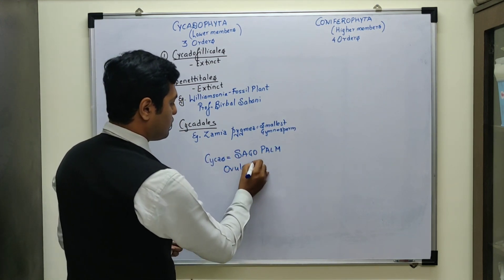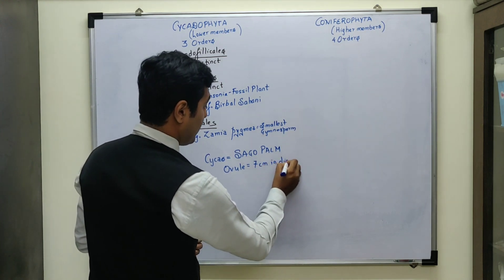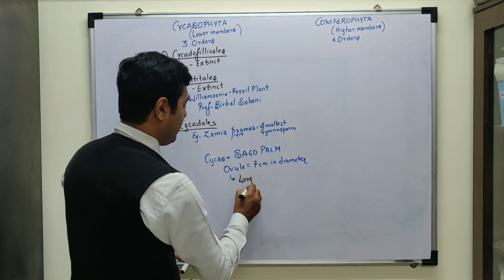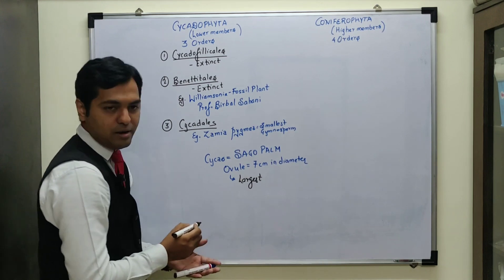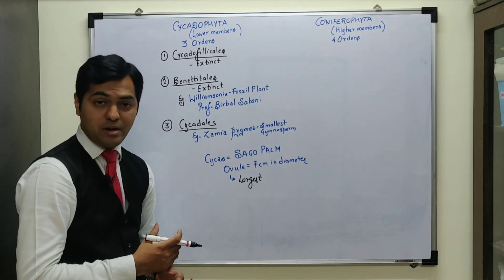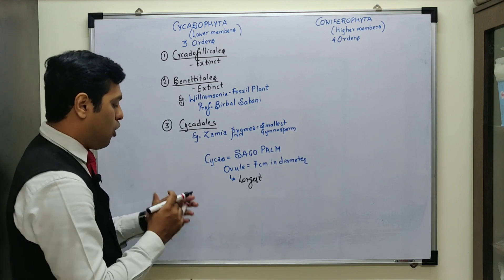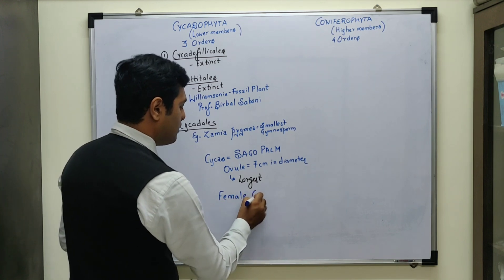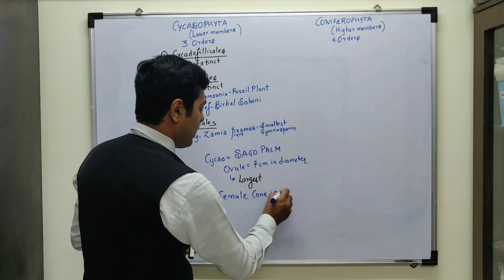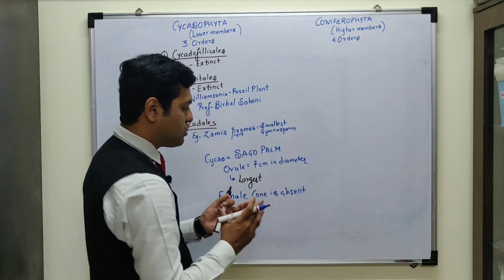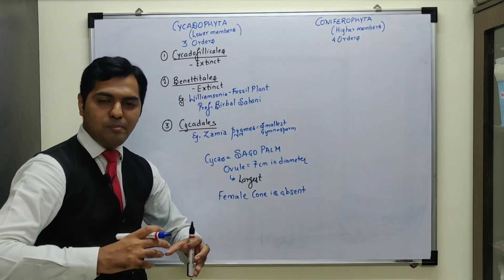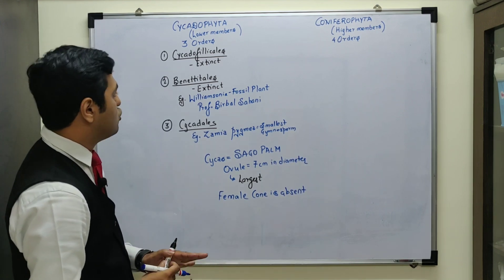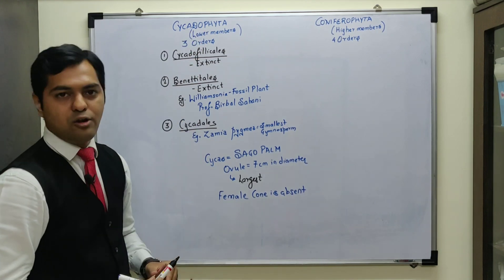In Cycas, the ovule is seven centimeters in diameter, and this size of the ovule is one of the largest ovules in the entire plant kingdom. In fact, Cycas also has the largest male gamete. Another important point to note is that in Cycas, the female cone is absent — they have only a cluster of megasporophylls, which are not properly organized to form a female cone. So female cone is absent in Cycas plants.